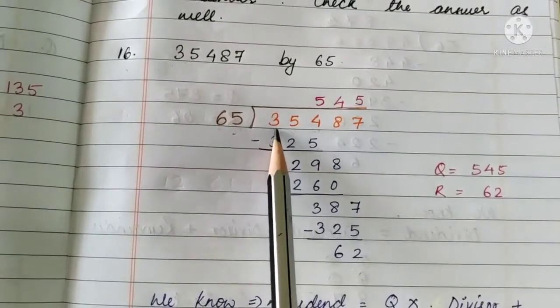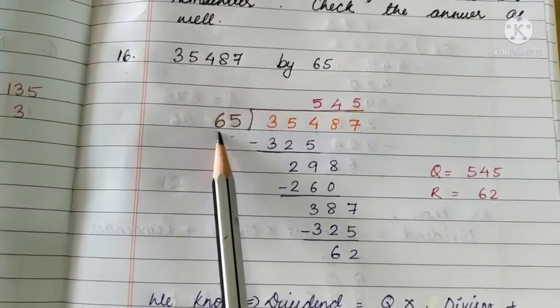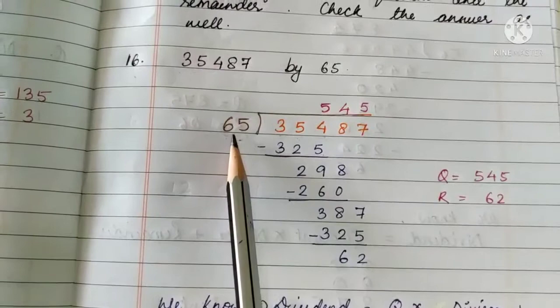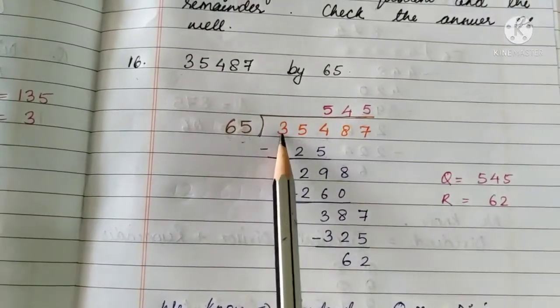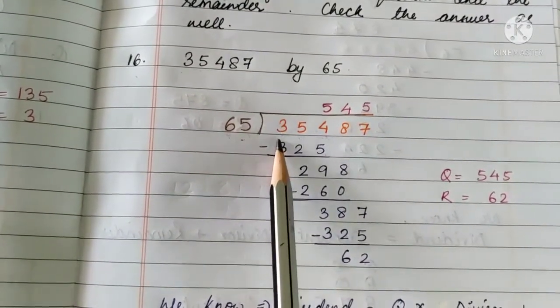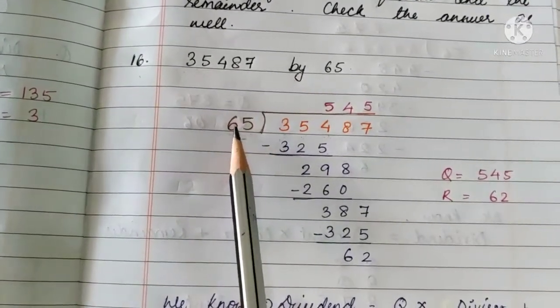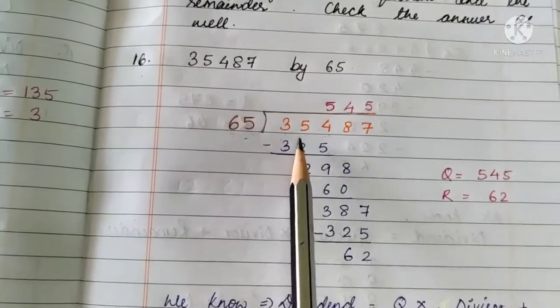So, just if it is 3, try to recall in the table of 6, where can you find a number with 3? That is, 6 fives are 30, right?